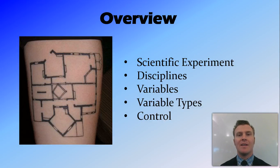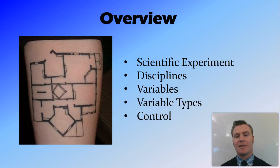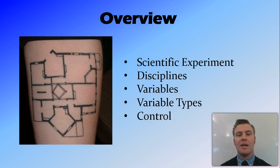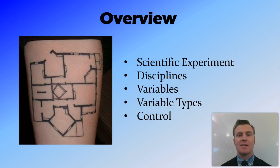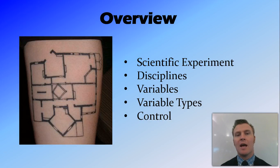In this video we've looked at what the scientific experiment is — a procedure that helps us show cause and effect. We've looked at the different disciplines: I would recommend chemistry or physics; biology sometimes works depending on the experiment; and psychology I would recommend steering away from. We've looked at the three variables: the independent variable (what you change, the cause), the dependent variable (what you measure, the effect), and controlled variables (everything else that stays the same). We've also covered continuous versus discrete variables, and the use of a control as the absence of the independent variable.